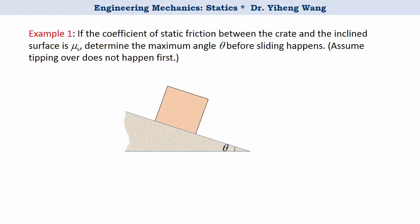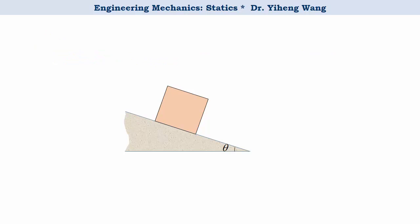In this example, let's assume that tipping over does not happen first, and we are asked to determine the maximum angle theta before sliding happens. Notice that very little information is given for this problem. We don't know the weight of the crate, we don't know the dimensions either. As usual, we start solving this problem by sketching the free body diagram of this crate.